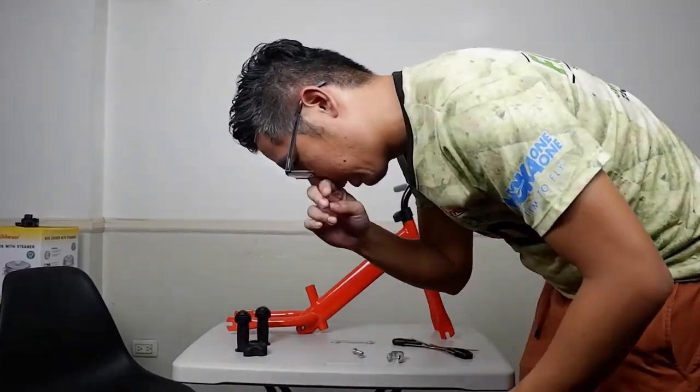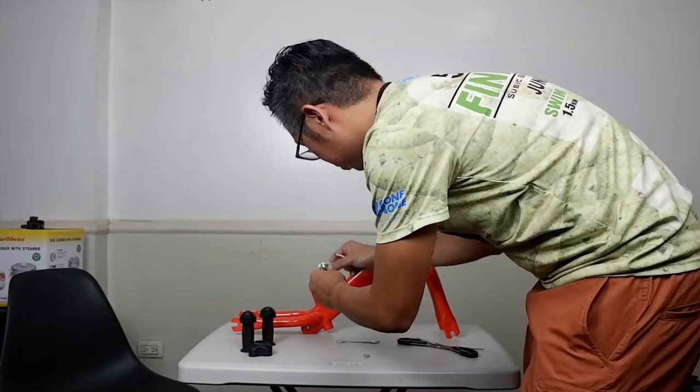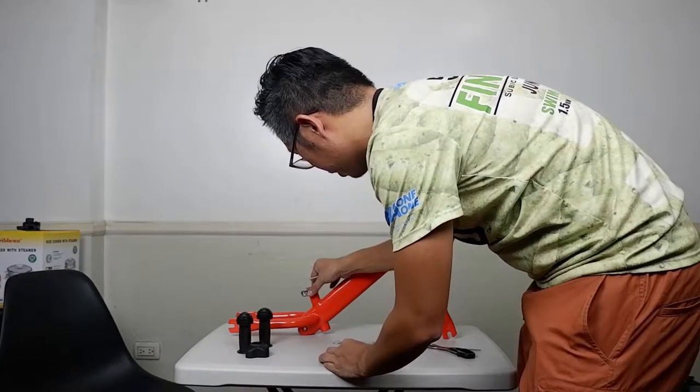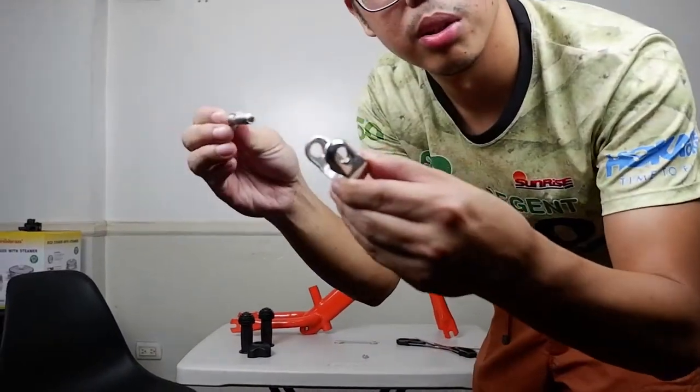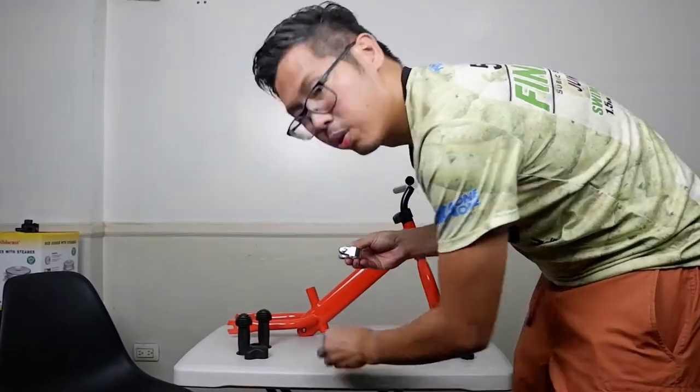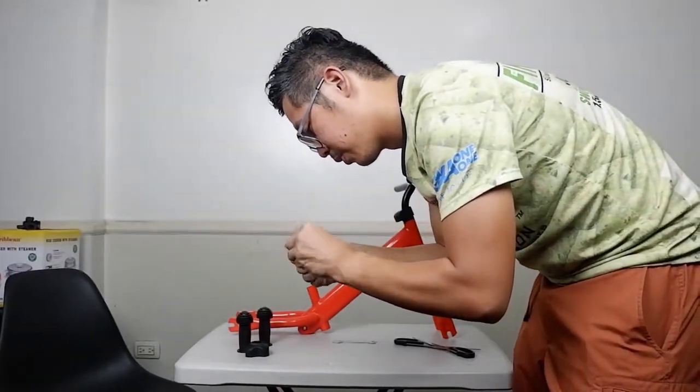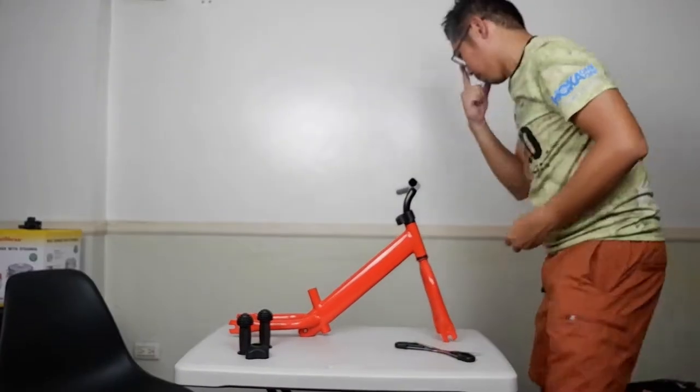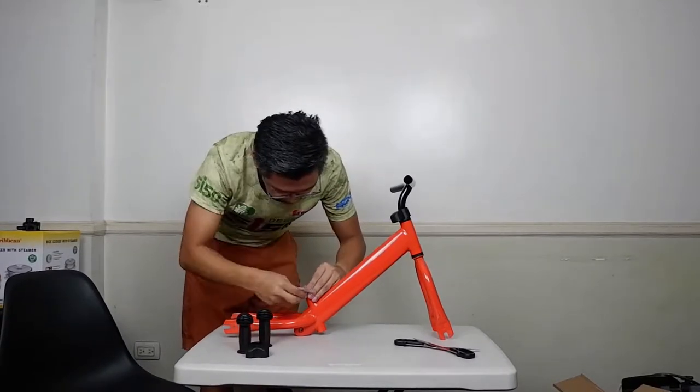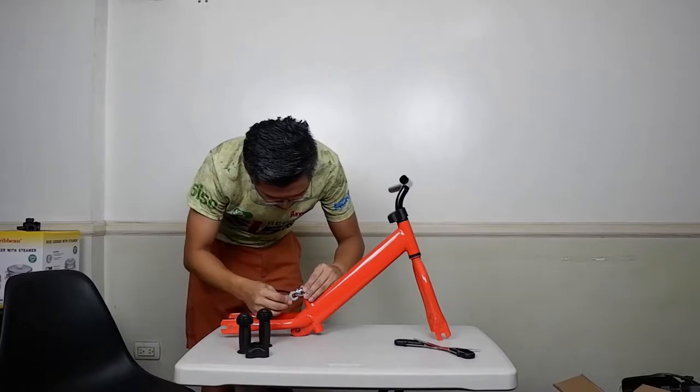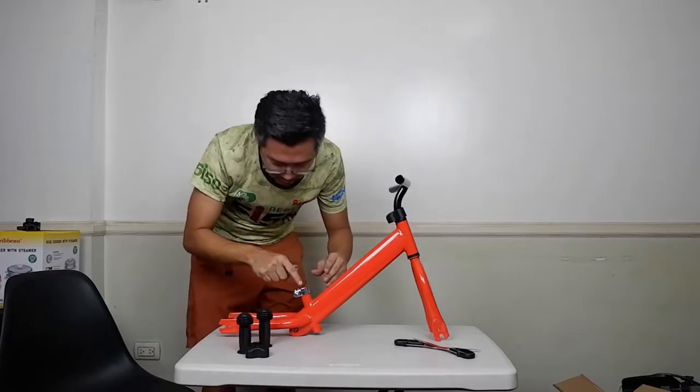Next we put the saddle. So again, clamp, put it facing here like that. But don't put it all the way down, just put it here. So what you do is put the screw, put the screw in with the nut, wrench it until it will hold.